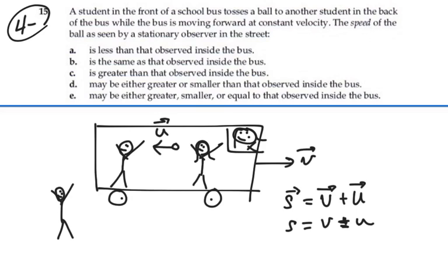So our answer to this question is going to be E: may be either greater, smaller, or equal to that observed inside the bus. If the bus is stationary, then it will be equal to the observers inside the bus as far as the speed goes. So that is our answer, E.